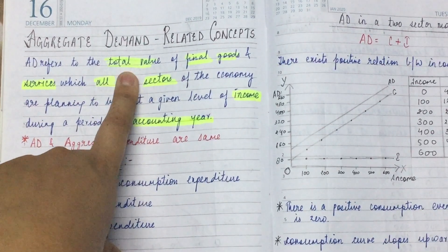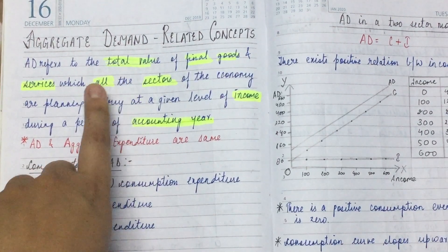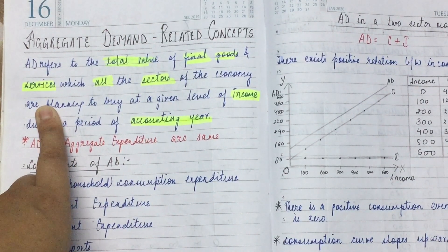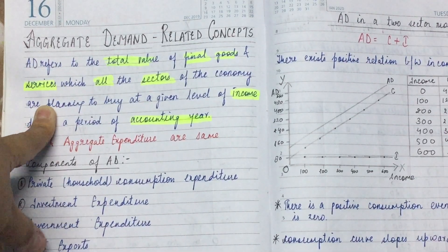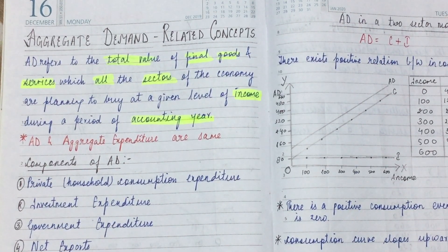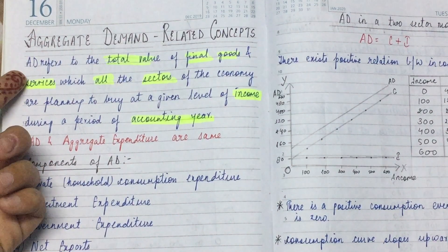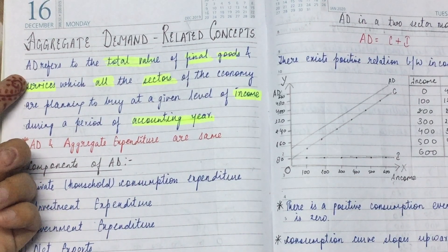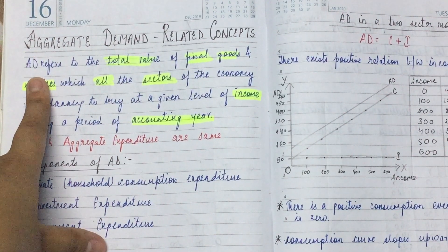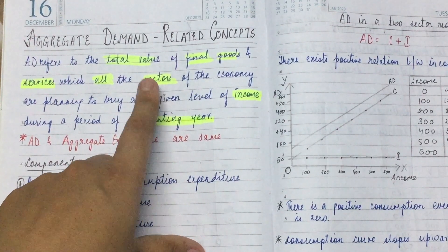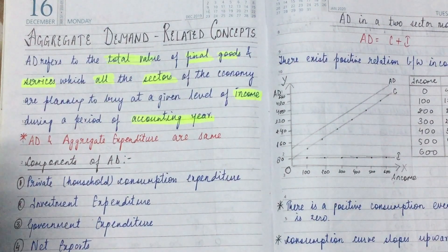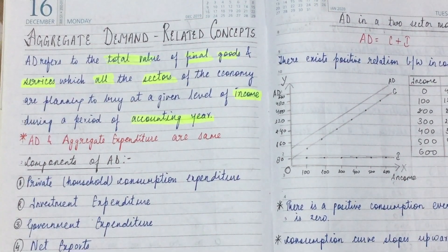Final goods and services — all the things made in a country, the goods and services and the value they have. In an economy, many sectors are always available: the household sector, the investment sector which is also the business sector, the third sector which is the government sector, and then comes the rest of the world or foreign sector.